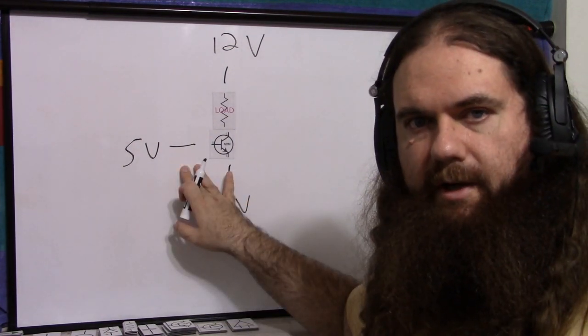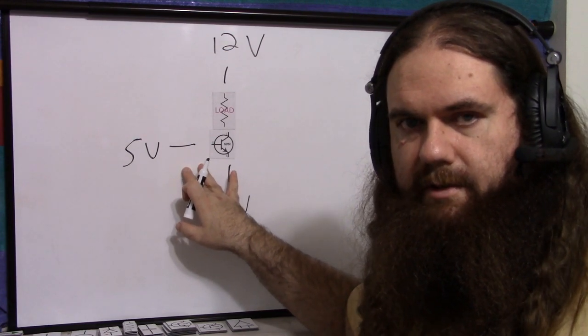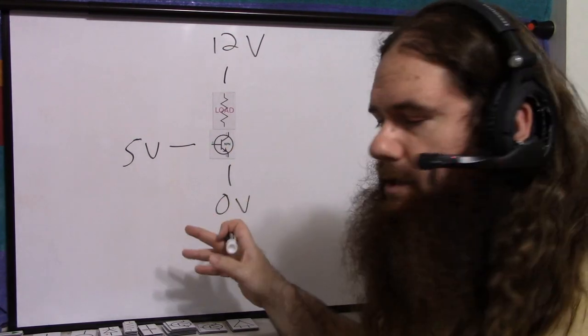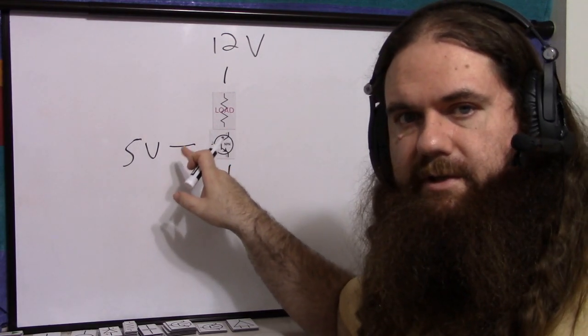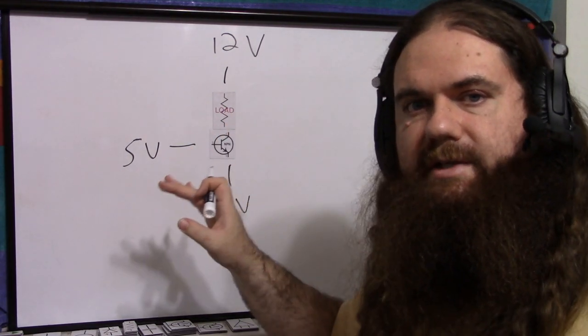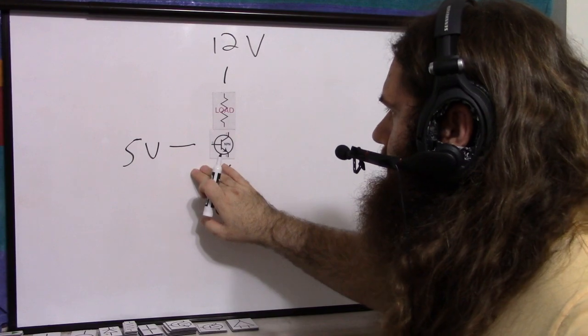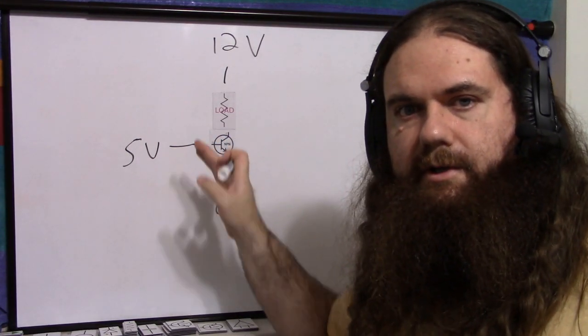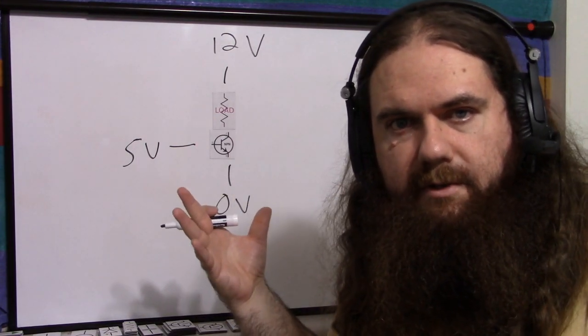But that doesn't really matter for a BJT in this situation, because conceptually the BJT amplifies current. So it doesn't have to be driven into full saturation, it just has to have enough base current to open up to enough collector current to drive the load as much as you need it driven.